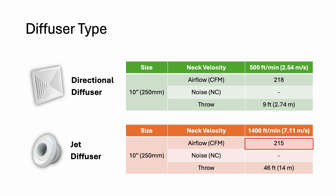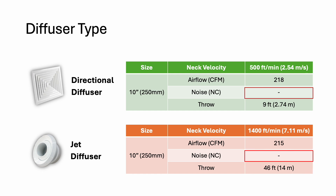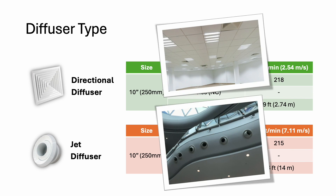For the same airflow, a 10-inch jet diffuser has a throw distance as far as 46 feet. Despite that, both diffusers produce negligible noise. So comparing these two, a directional diffuser is more suitable for home and office use because the ceiling height in these places is typically 9 to 10 feet only. Whereas a jet diffuser is more suitable in places where people are very far away from the diffuser — for example, airports and the famous Qatar World Cup stadium.